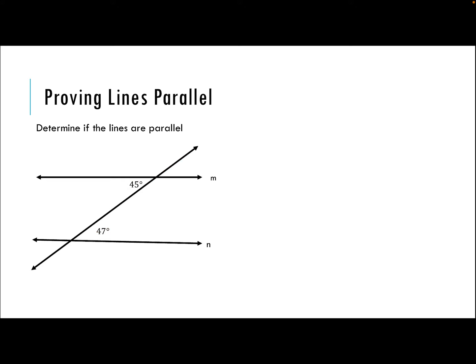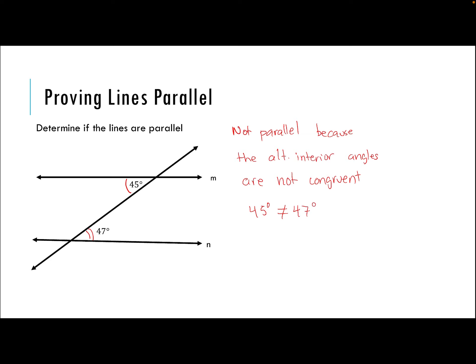Next, we're determining if these lines are actually parallel. We have a pair of alternate interior angles: this angle is 45 degrees and this angle is 47 degrees. We can say these lines are not parallel, because the alternate interior angles are not congruent. We know that simply because 45 degrees does not equal 47 degrees — they aren't the same value. So line M is not parallel to line N.